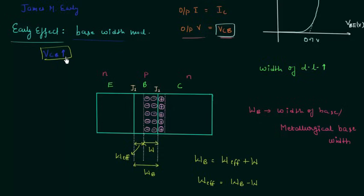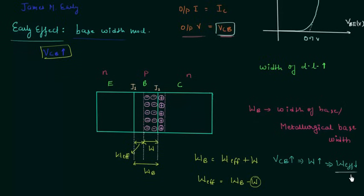Now if we increase VCB, the reverse bias voltage, W will increase because penetration of the depletion layer increases in the base region. And when W increases, W_effective will decrease. W_effective is the width of the region where recombination takes place. So when W_effective decreases, the chance of recombination in the base region also decreases. The base was thin, and because of penetration of the depletion layer, it is now thinner, so the chance of recombination reduces.